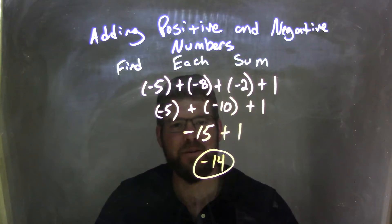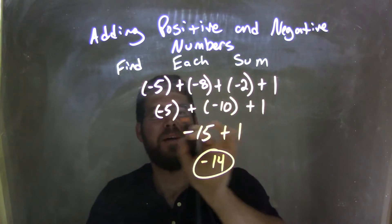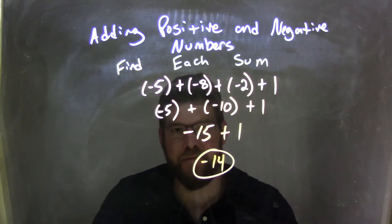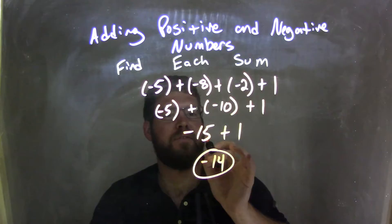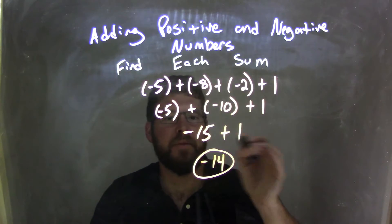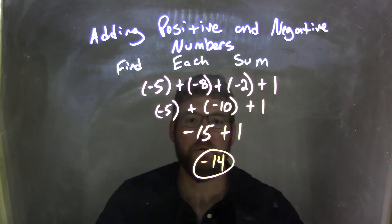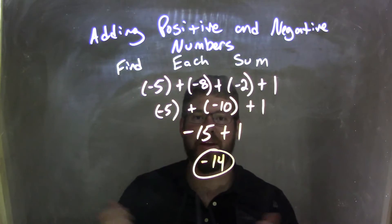Now I have negative 10 plus negative 5. Well, negative 10 plus negative 5 comes out to be negative 15. That's another easy one to add together. So we have negative 15 here. We bring down the 1. We have negative 15 plus 1 is negative 14. That's the final answer.